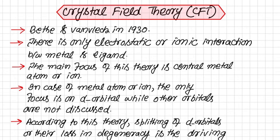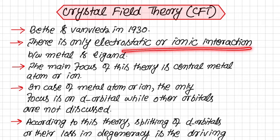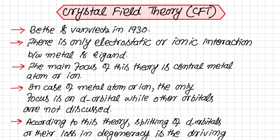This is the very fundamental point of this theory, and that is why the word 'crystal' has been inserted in the name of this theory — because crystal means ionic compounds, and this theory suggests that there is only electrostatic or ionic interaction between metal and ligand, with no coordinate covalent bond.